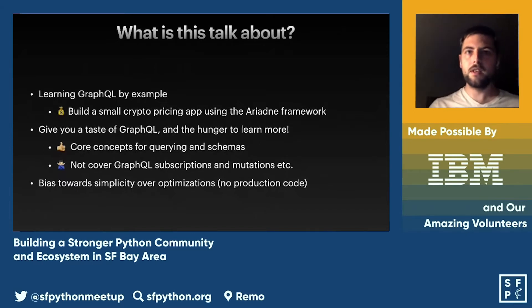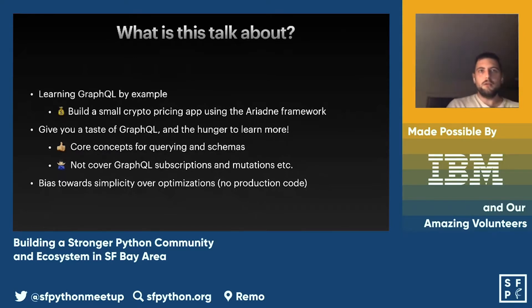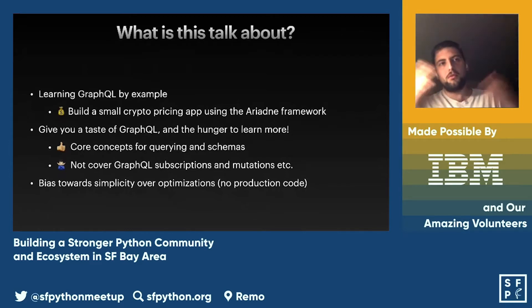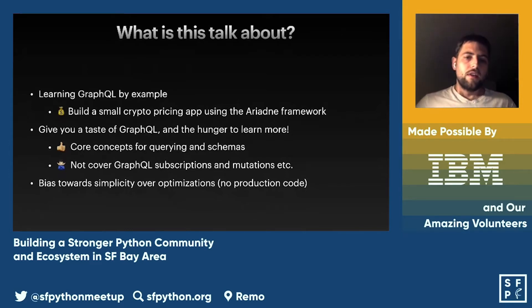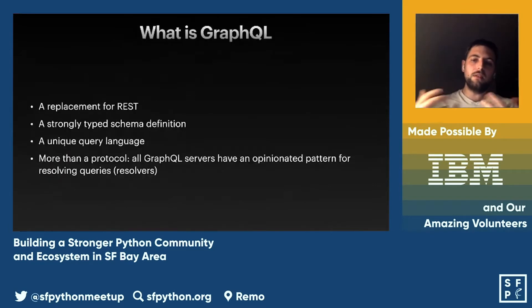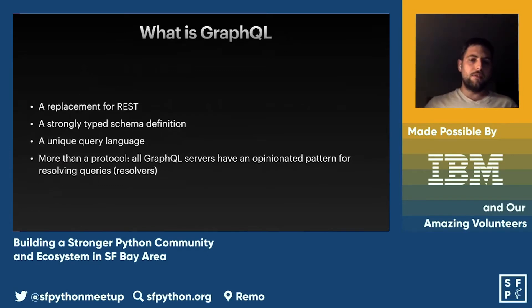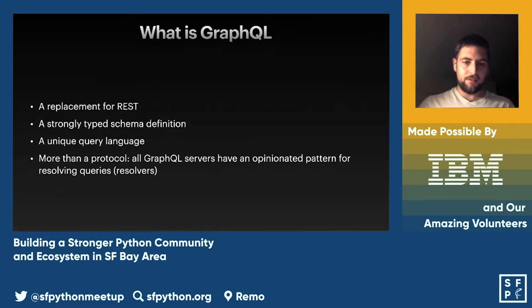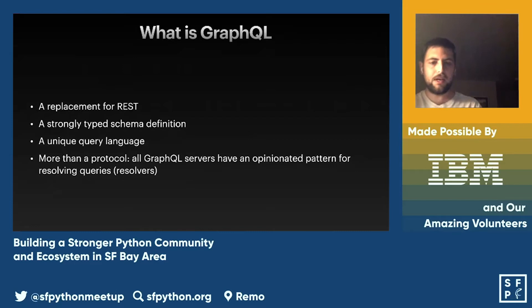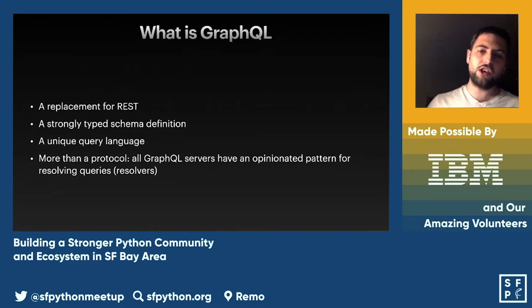What is GraphQL? It's often described as a replacement for REST. The biggest difference is that GraphQL servers use a schema to describe the shape and dimensionality of your data. This schema is strongly typed, which encourages clients to explore data — compared to a REST API that is heavily dependent on documentation.